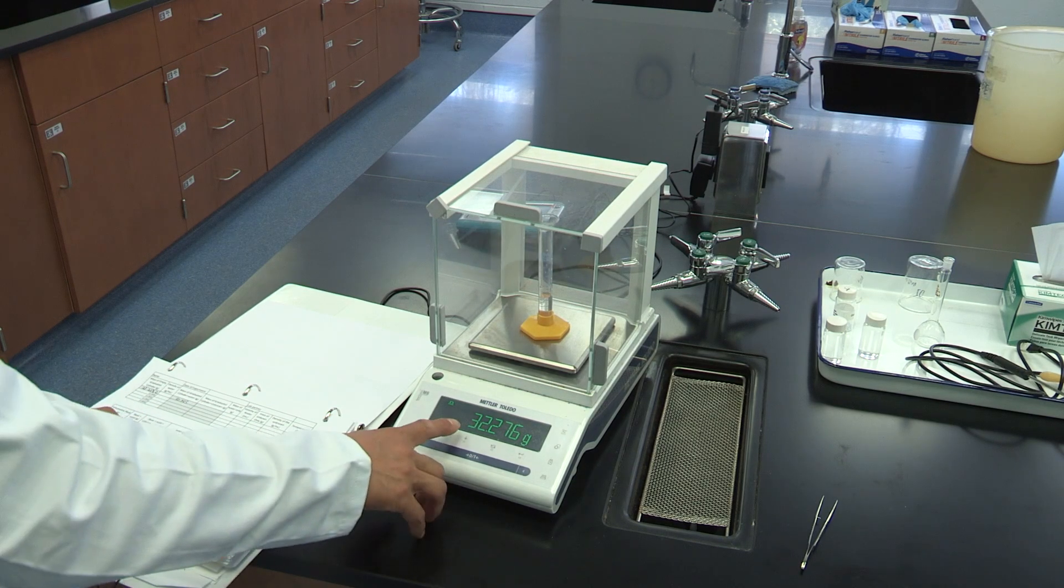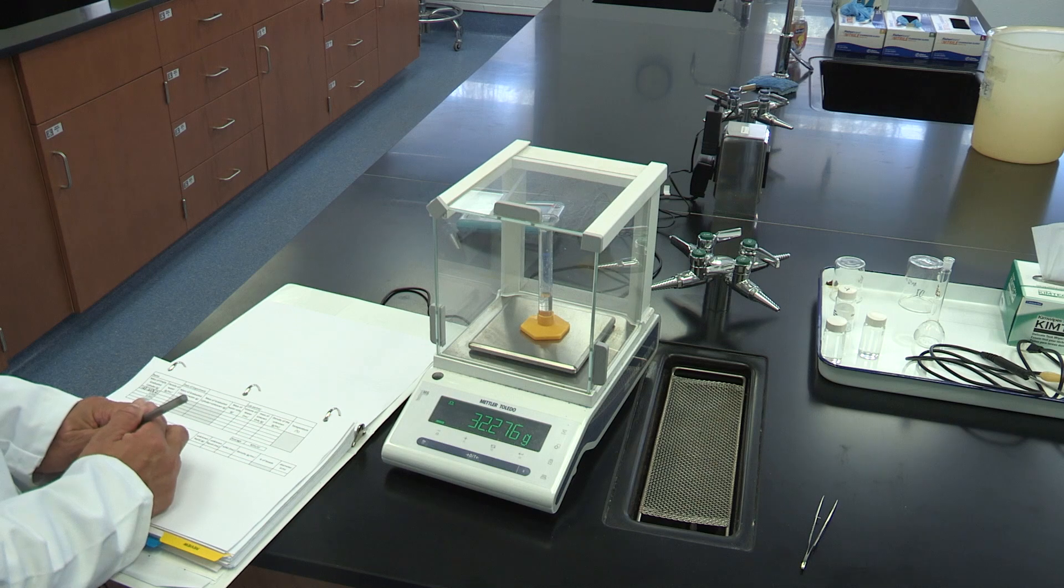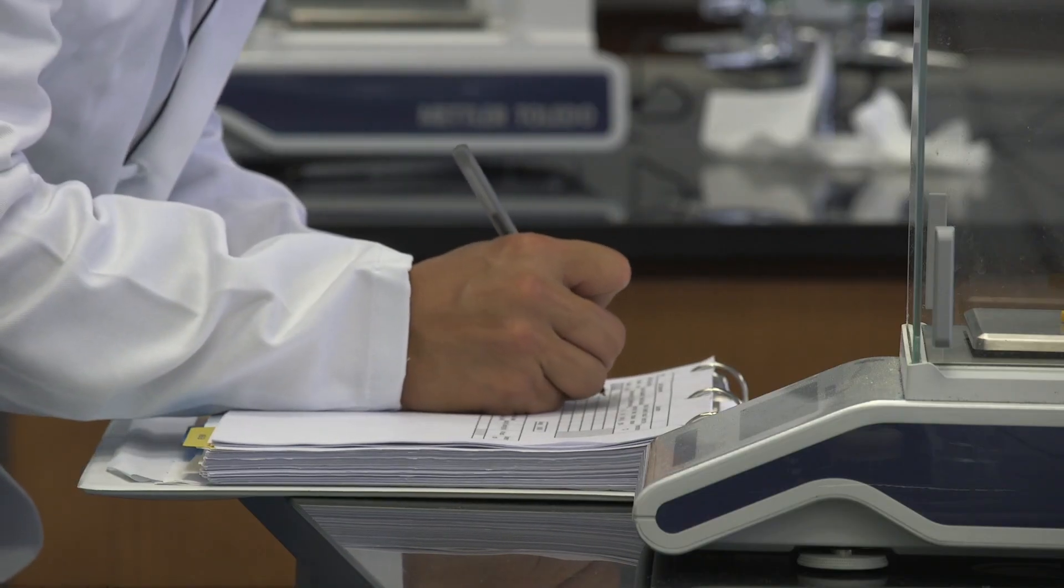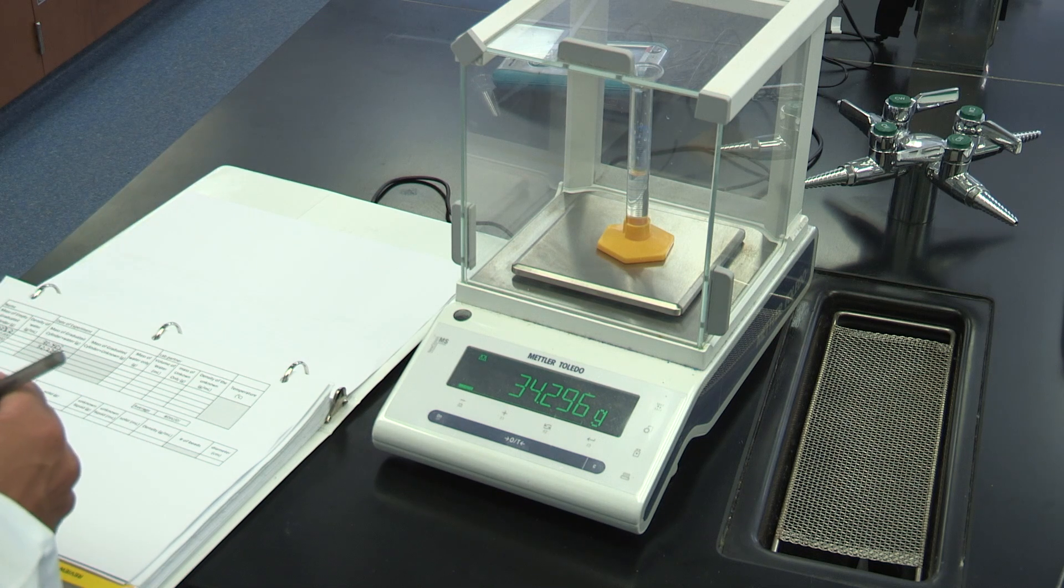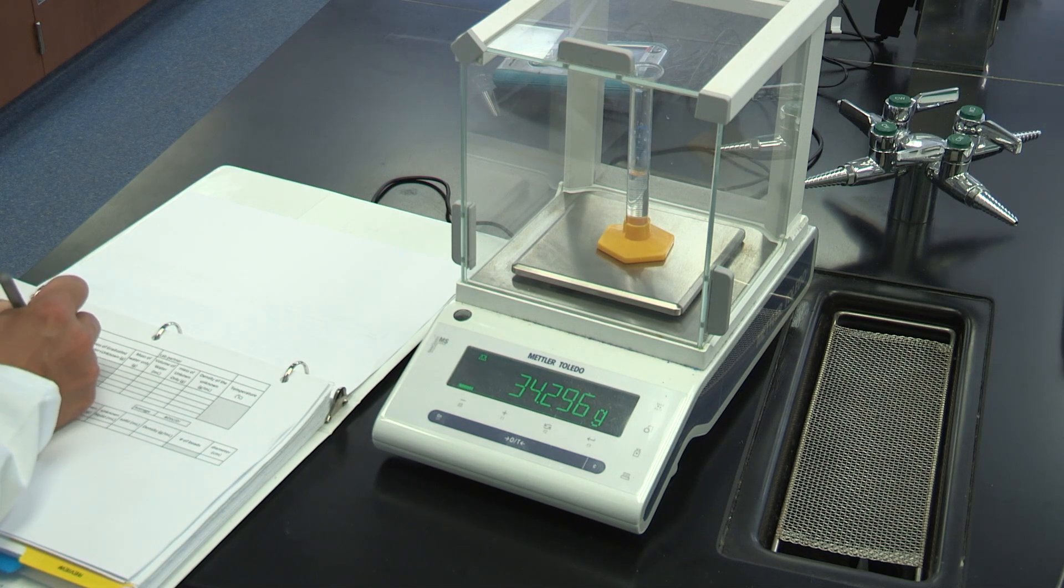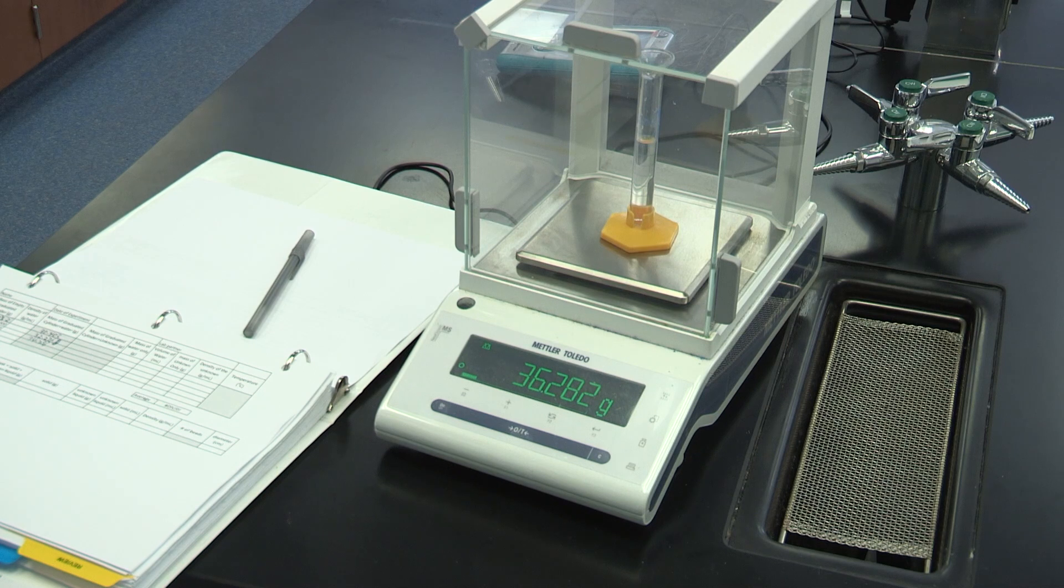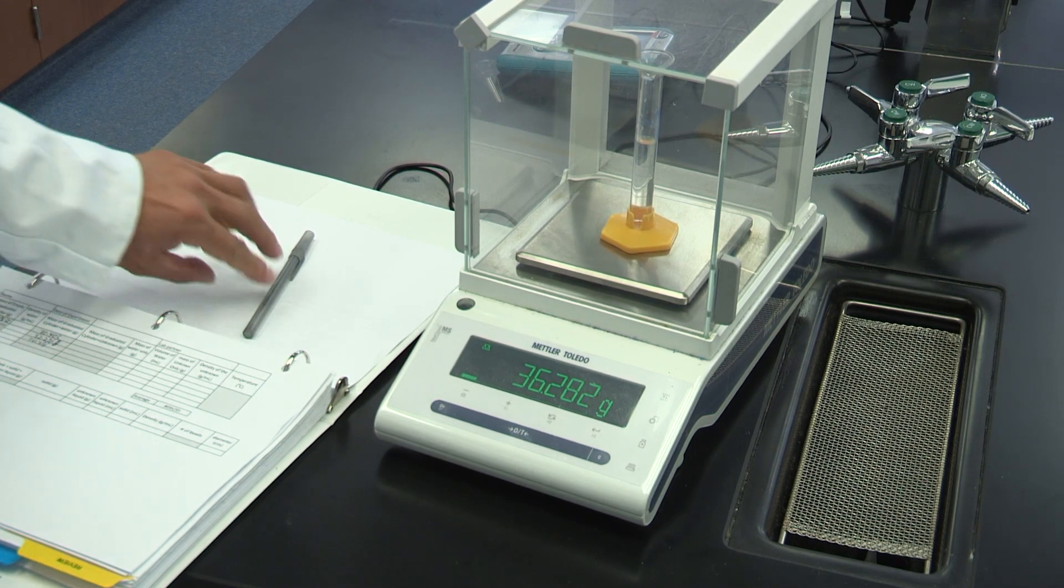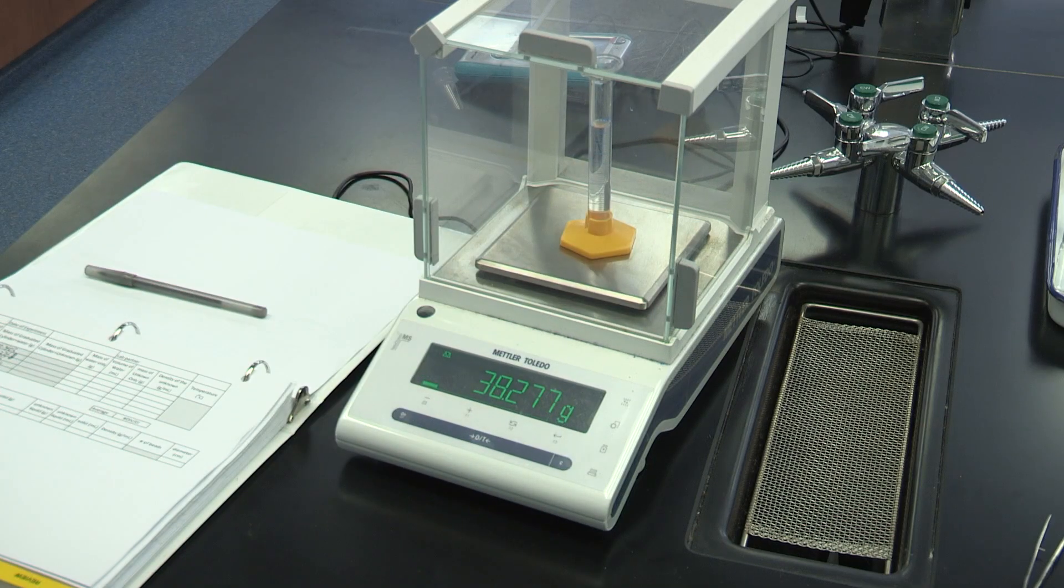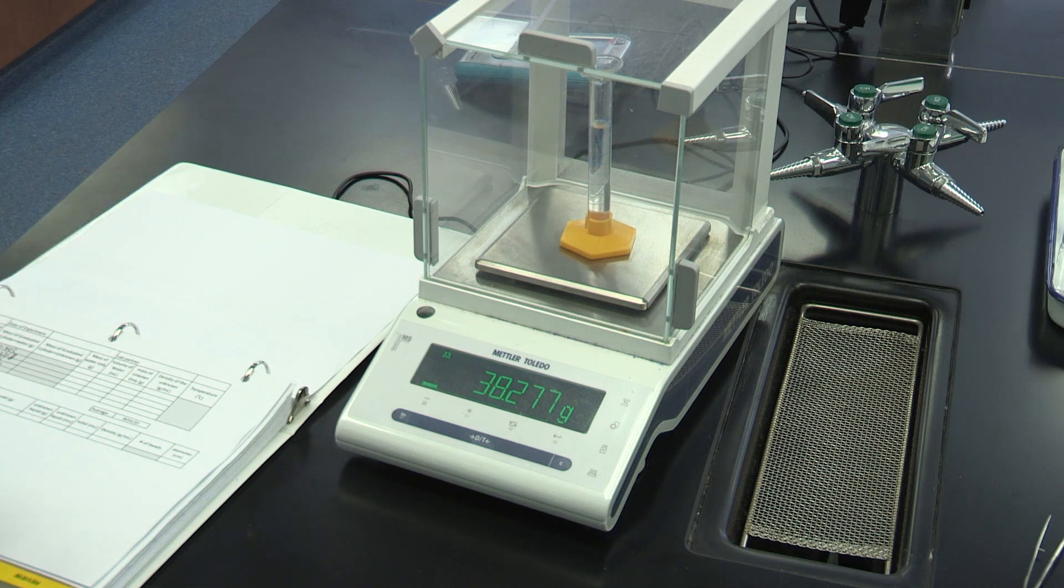4 milliliter mark. The mass is 32.276 grams. Add 6 milliliter mark. It's 34.296 grams. Add 8 milliliter mark. The reading is 36.282 grams. Finally, at 10 milliliter mark. The reading is 38.277 grams.